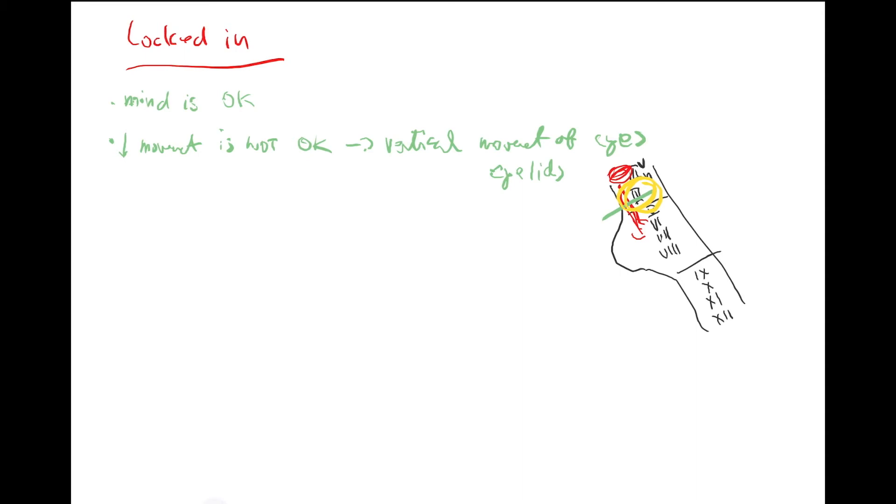Why will locked-in die much faster although the brainstem is otherwise fine? Some students say because he understands the situation and wants to die, but I want you to figure out another mechanism which is much more obvious. The ones in vegetative state are able to move on their bed.